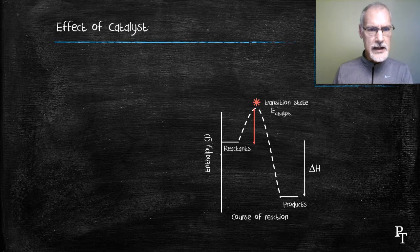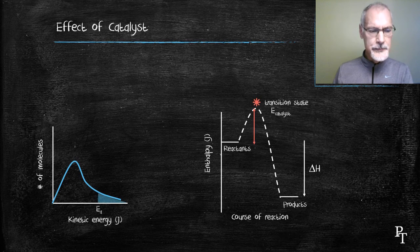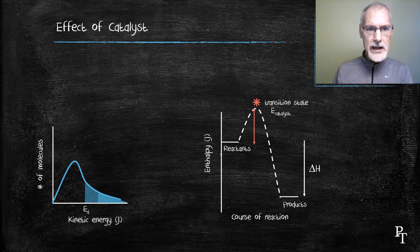Let's take a look at how this appears on the Maxwell-Boltzmann distribution. Here I have my species at a given temperature, and without a catalyst, my activation energy. The introduction of a catalyst reduces that energy requirement, moving it to the left, thereby allowing a greater fraction of my molecules to react.